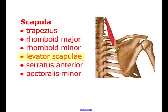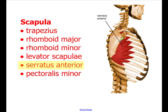The levator scapula has attachment points on the cervical vertebrae — C1, C2, C3, and C4 — and its insertion point is on the medial margin of the scapula, up towards the superior end. The serratus anterior is a very interesting looking muscle; it attaches on eight ribs, and its insertion is down on the medial margin of the scapula.